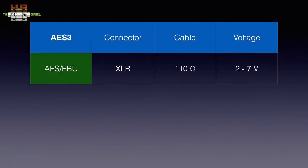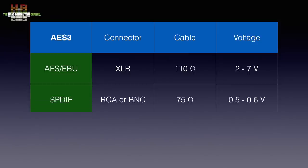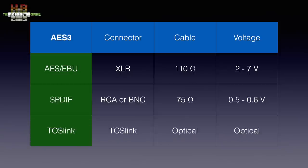The AES 3 standard has three variants. AES-EBU uses XLR connectors, 110 ohm cable and 2 to 7 volt peak to peak. SPDIF uses RCA or BNC connectors, 75 ohm cable and 0.5 to 0.6 volts peak to peak. TOSlink is identical to SPDIF but uses an optical instead of electrical connection. AES-EBU uses slightly different subcode but the audio data structure is identical to SPDIF and TOSlink.